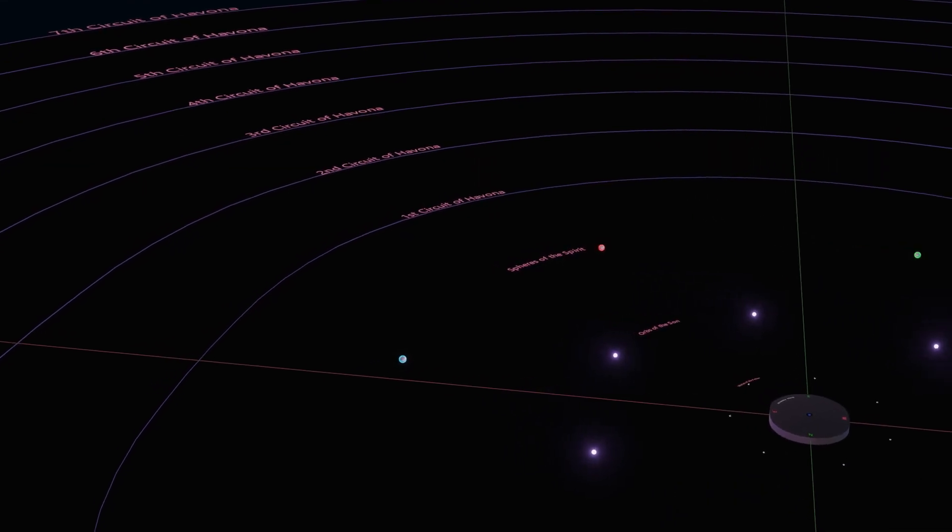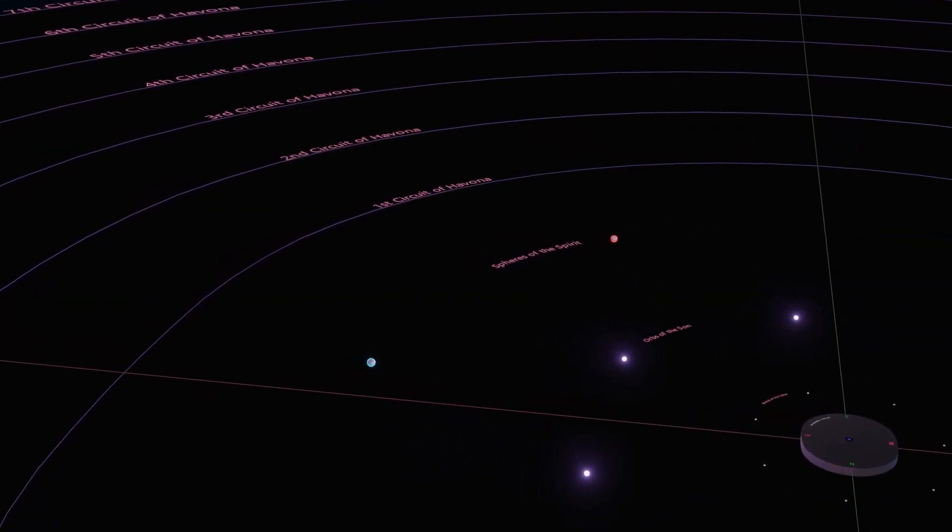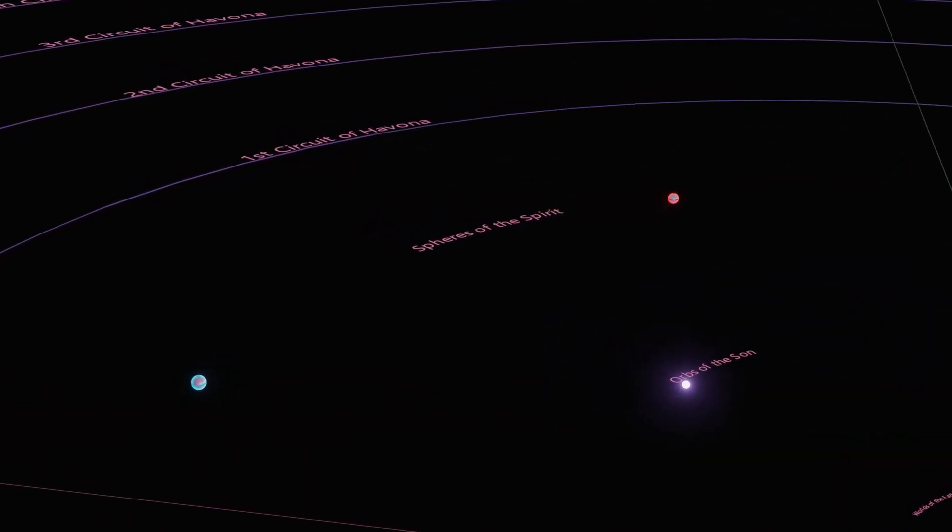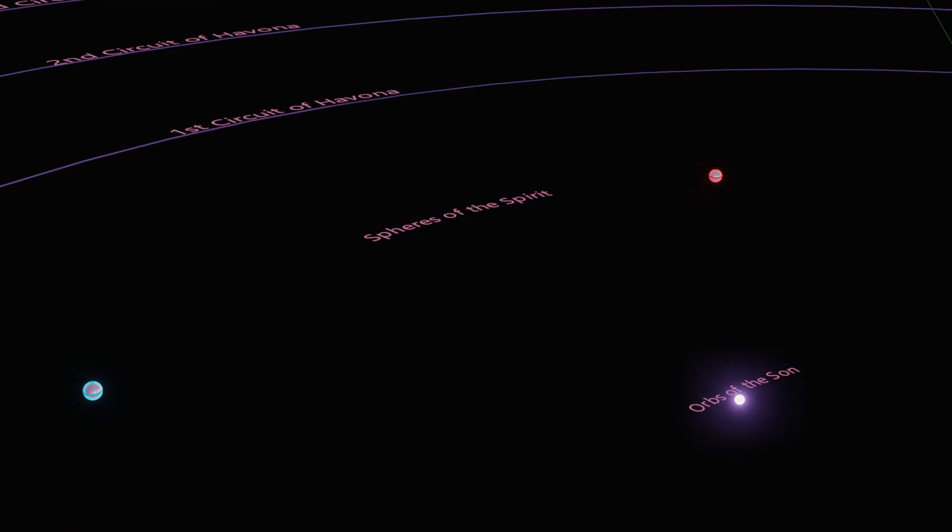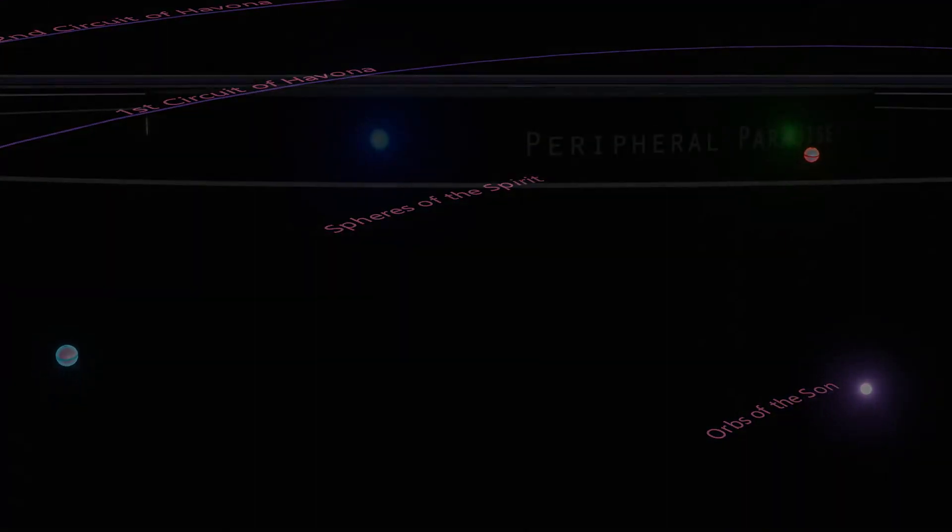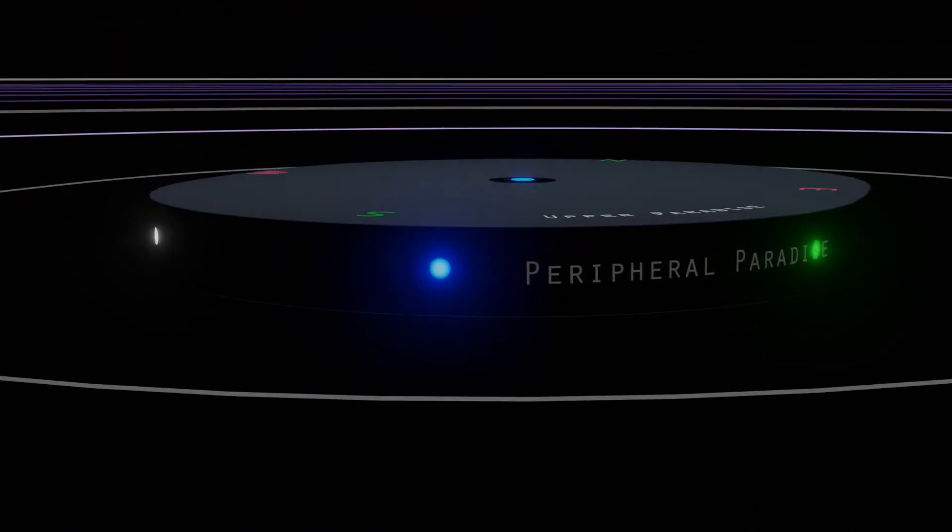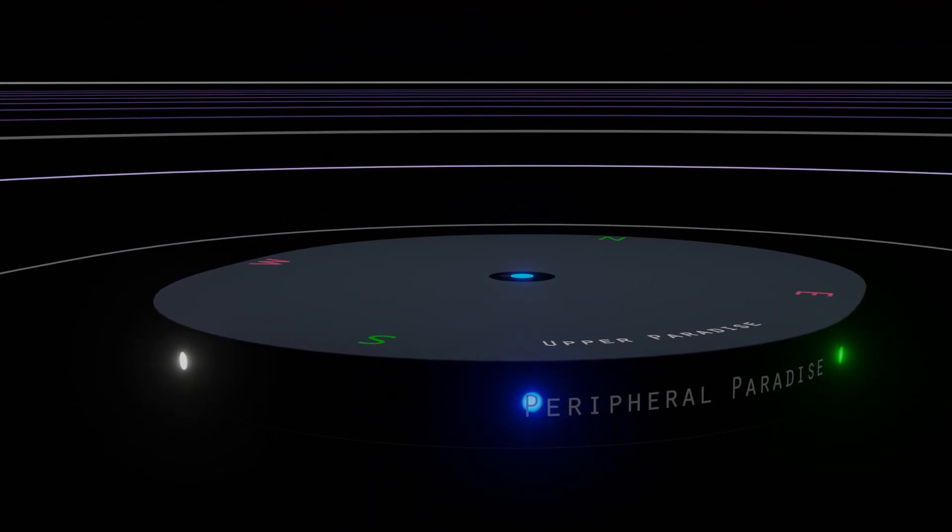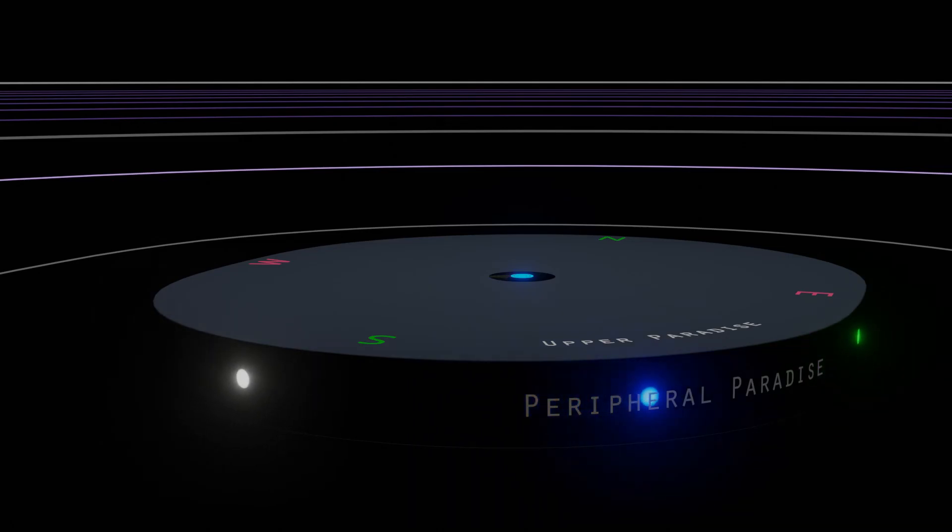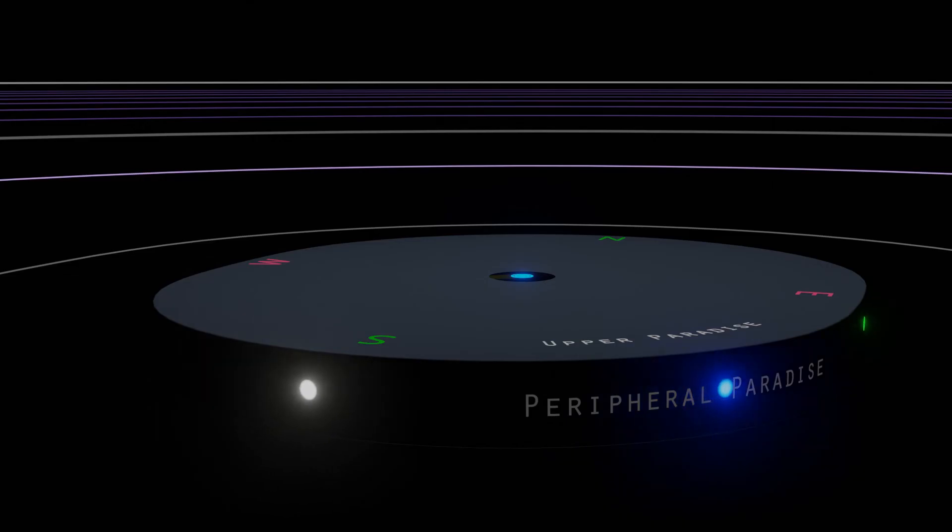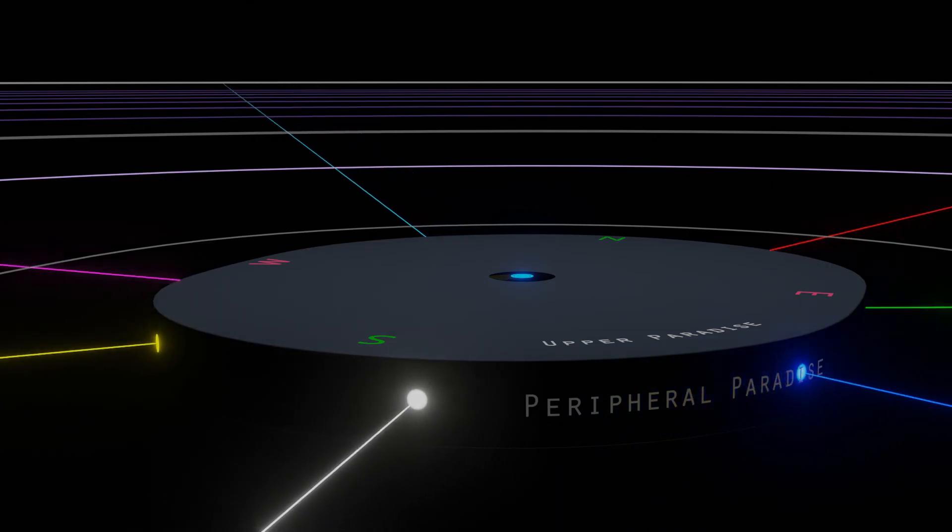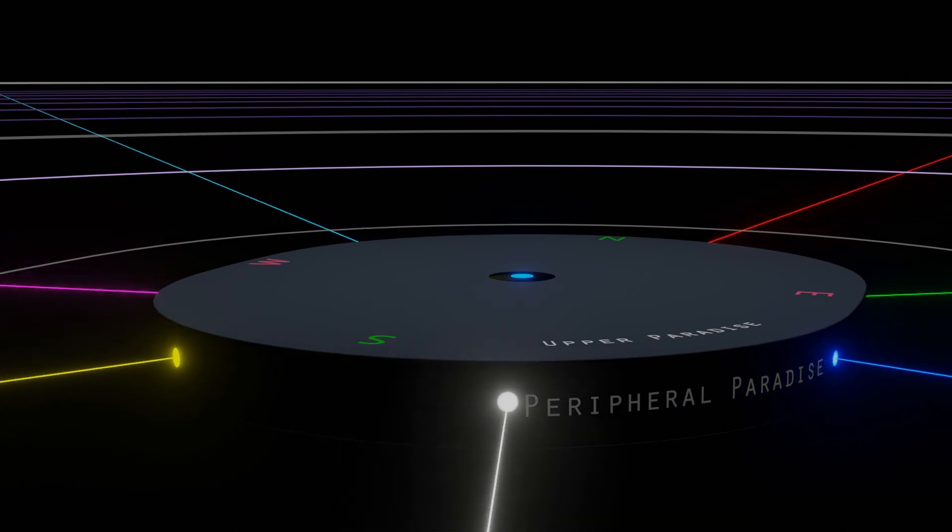The seven Master Spirits have their personal seats of power and authority on the seven spheres of the spirit, which circle about Paradise in the space between the shining orbs of the sun and the inner circuit of the Havona worlds. But they maintain force focal headquarters on the Paradise periphery. Here the slowly circulating presences of the seven Supreme Power Directors indicate the location of the seven flash stations for certain Paradise energies going forth to the seven superuniverses.